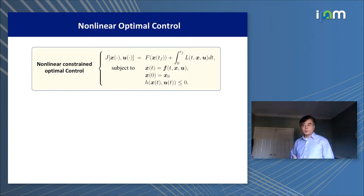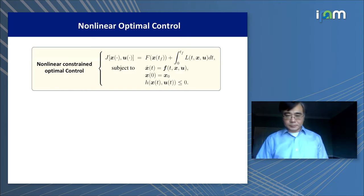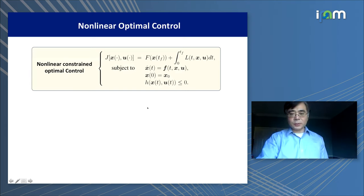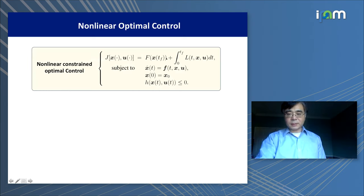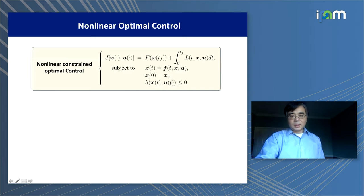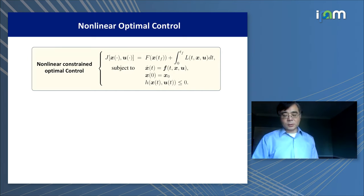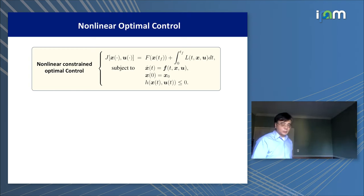In this talk, we're interested in nonlinear optimal control problems. We try to design the control u to minimize a performance metric given by an endpoint cost and a running cost, subject to the dynamic system as well as some constraints. For this optimal control problem, it's well known that there are two types of solutions: open-loop and closed-loop solutions.